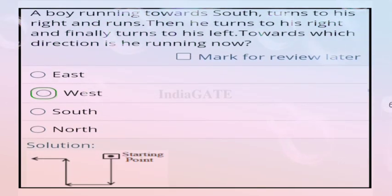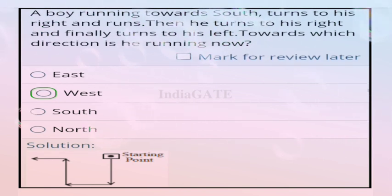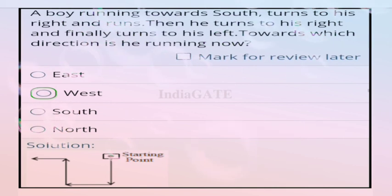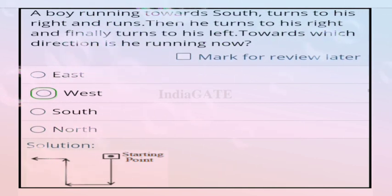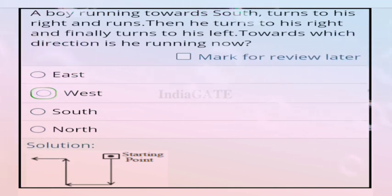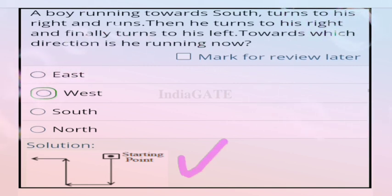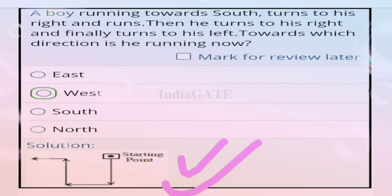Next question: a person running towards south turns to his right and runs, then turns to his right again, and finally turns to his left. Which direction is he running now? The correct answer is option B, West.